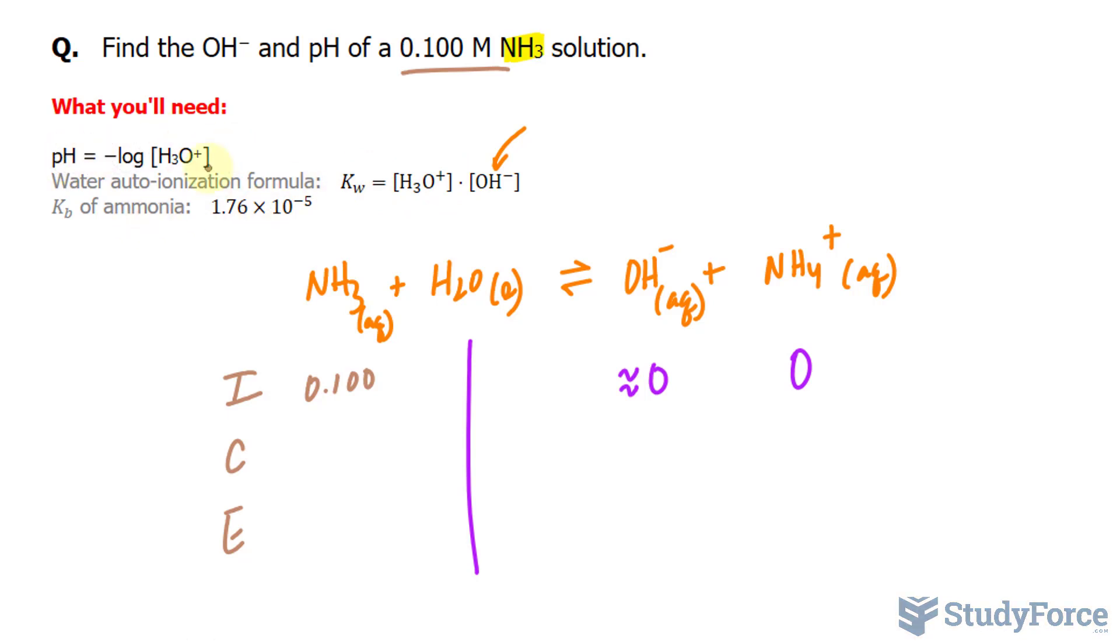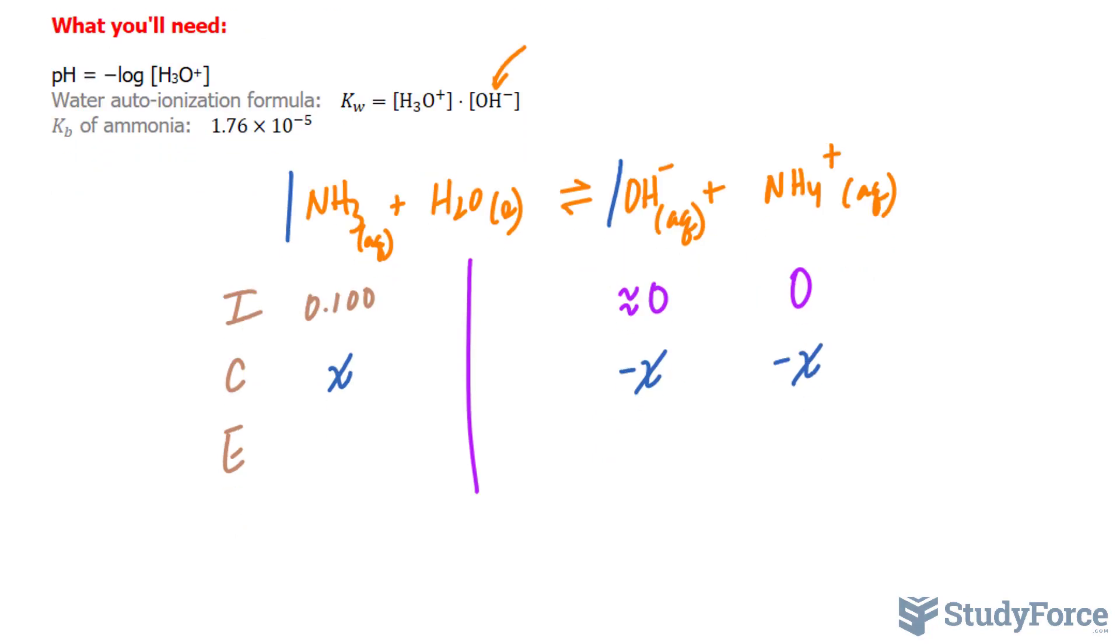So it's a lot of work. We will start by setting one of these molecules as X for the change, and we will compare stoichiometrically the ratios. So it's a one-to-one ratio. This will be negative X, and this will also be negative X because we're comparing reactants to products. To find E, we use the formula I plus C equals E. So let's add up these two, 0.100 plus X, and adding these two up is negative X and negative X.